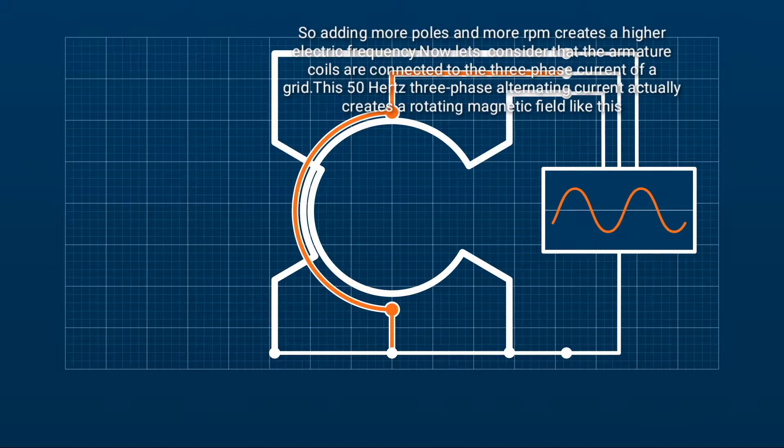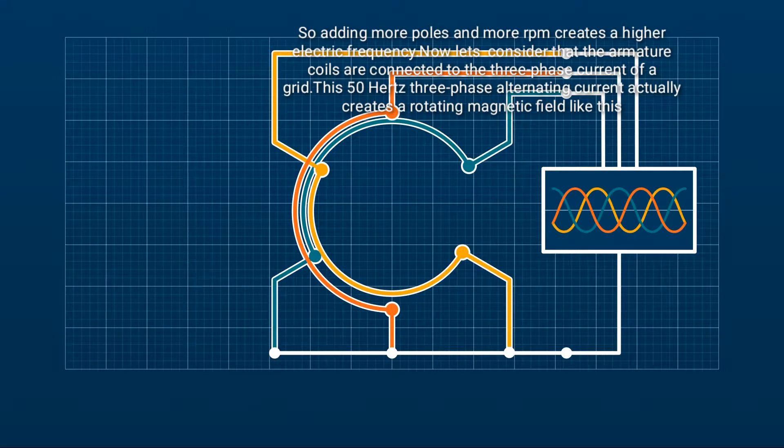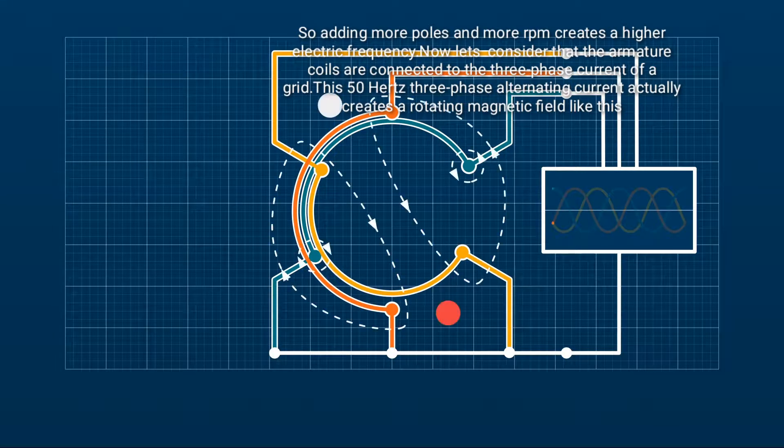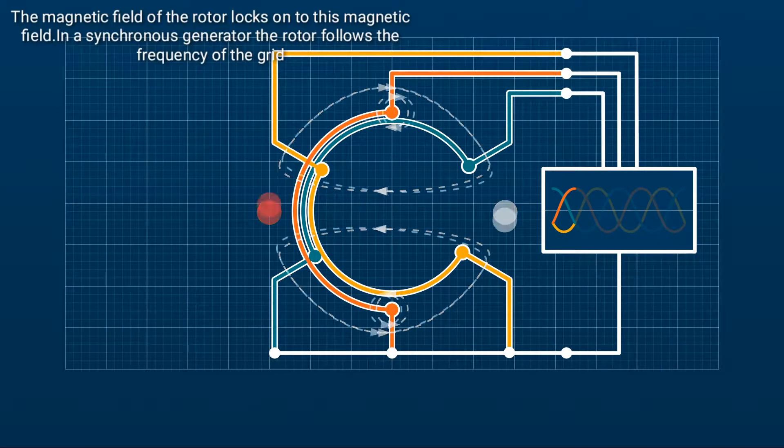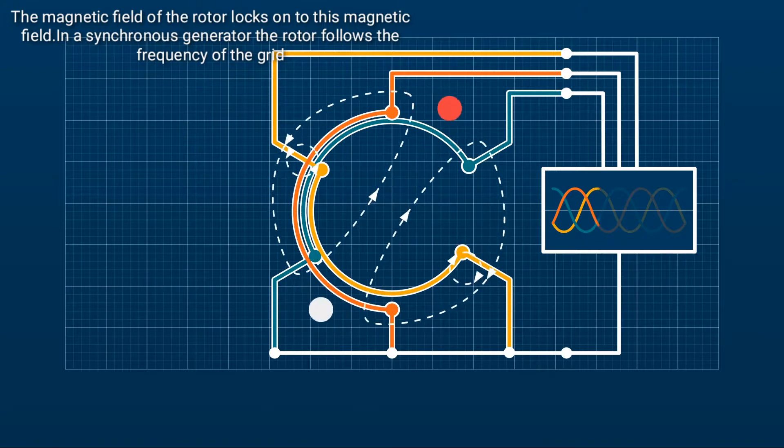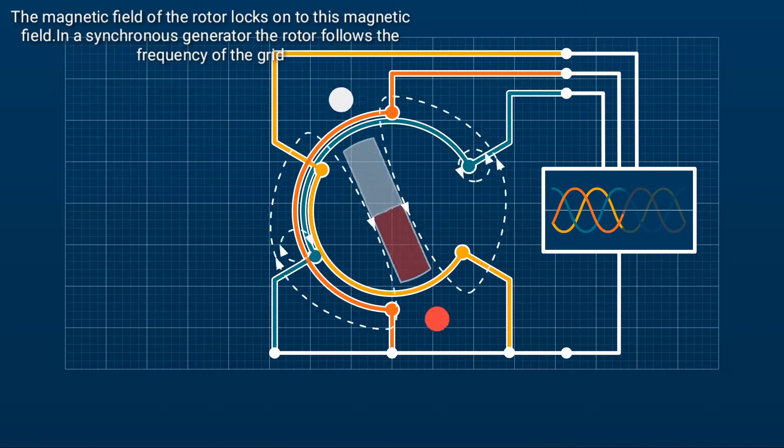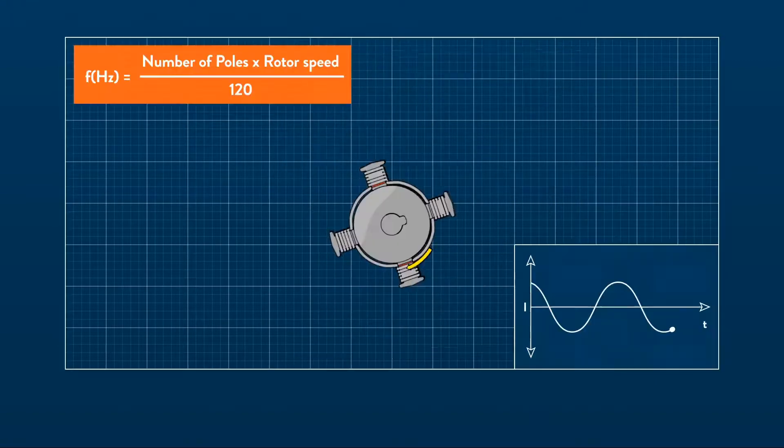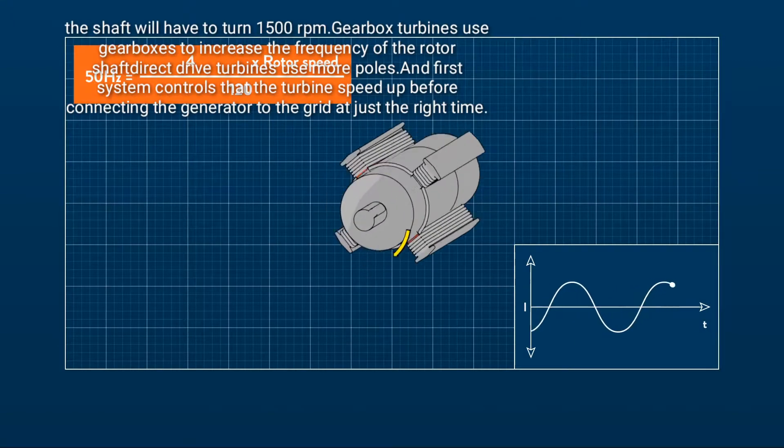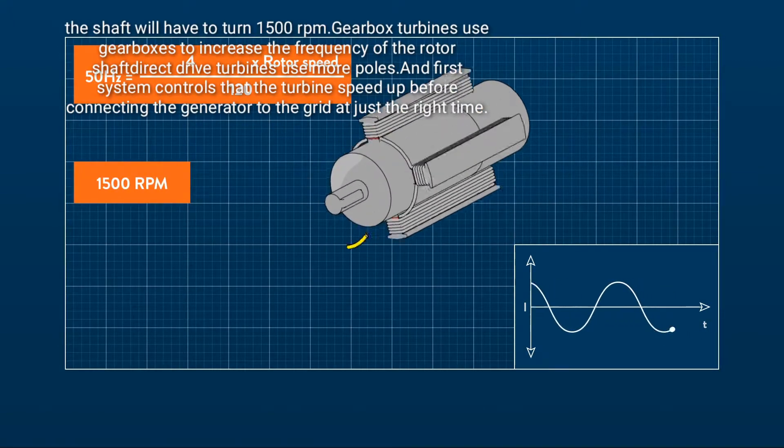This 50 Hz three phase alternating current actually creates a rotating magnetic field like this. The magnetic field of the rotor locks onto this magnetic field. In a synchronous generator, the rotor connected to the grid shaft will have to turn 1500 RPM.